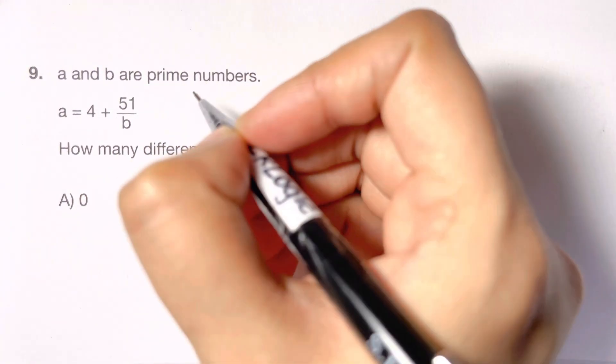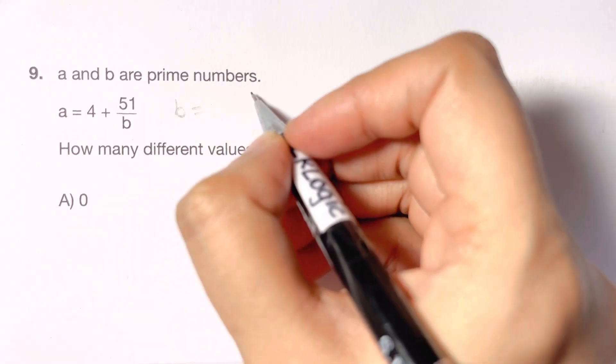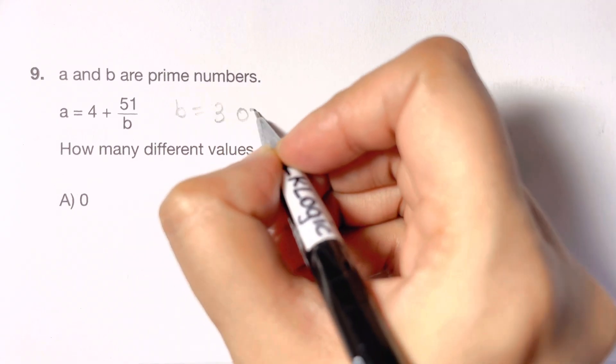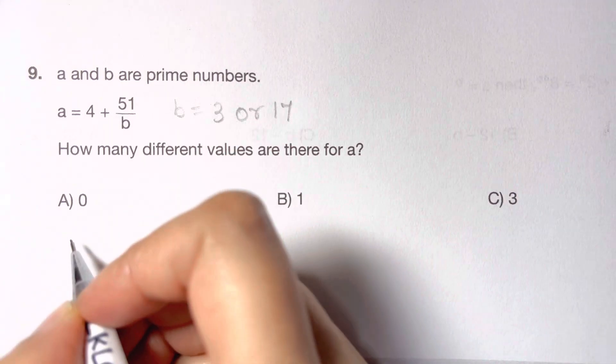Since B is a prime number, B can be equal to 3 or 17. So let's substitute and check our values.